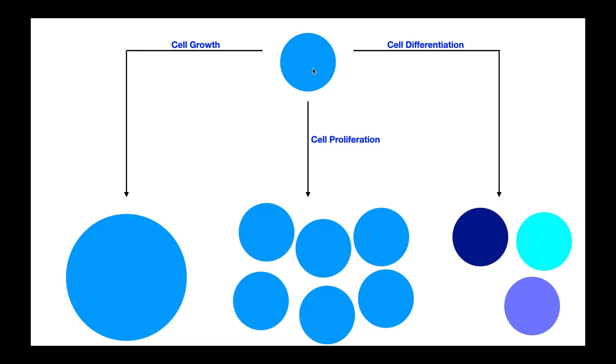So a good example of differentiation would be of macrophages. Macrophages are immune cells that we find all over the body, and in general, they clean up debris when there's an injury, and they phagocytize bacteria, and they can also initiate certain parts of the immune response.